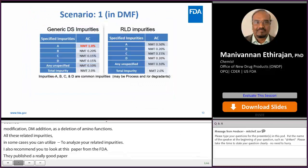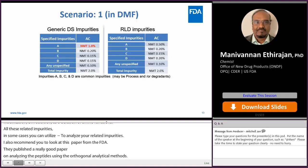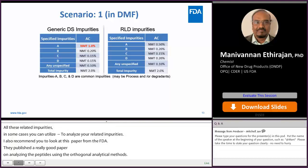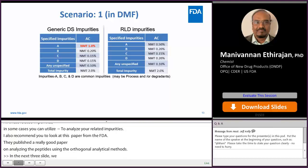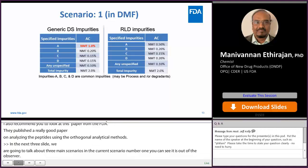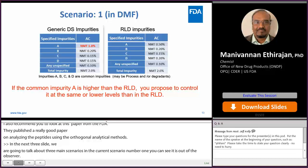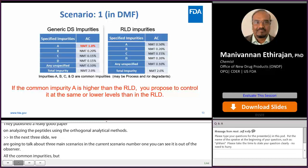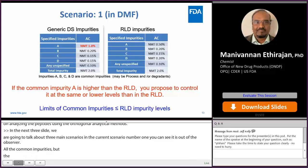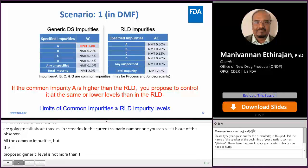In the next three slides, we are going to talk about three main scenarios. In scenario number one, you can see both the generic as well as RLD observed all the common impurities, but in the RLD impurity A is observed at 0.50 percent, and your proposed generic level is not more than 1.0 percent. This is not acceptable. If the common impurity A is higher than the RLD, you should propose to control it at the same or lower levels than in the RLD. Always remember: limits of common impurities should be less than or equal to RLD impurity levels.